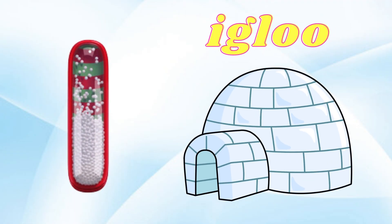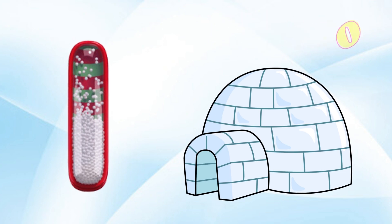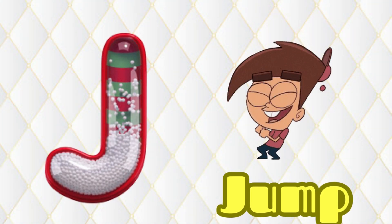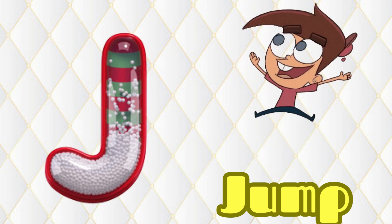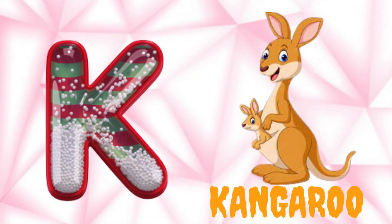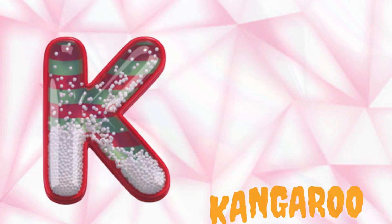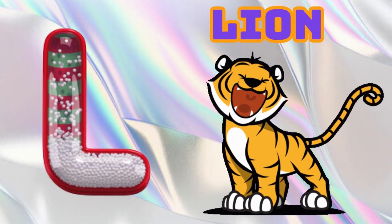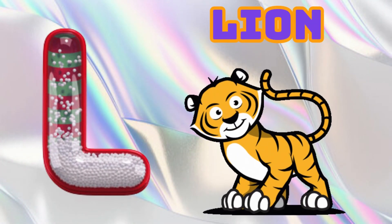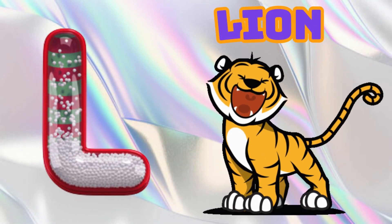I is for Igloo, I-I-Igloo. J is for Jump, J-J-Jump. K is for Kangaroo, K-K-Kangaroo. L is for Lion, L-L-Lion.